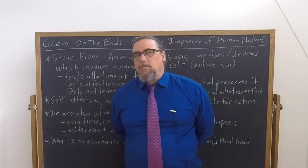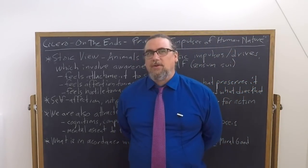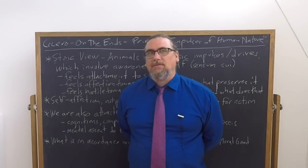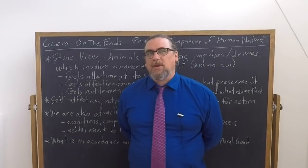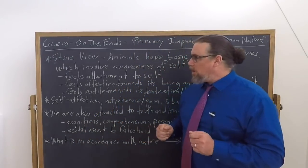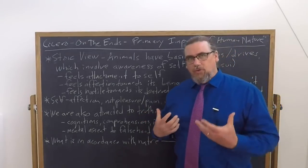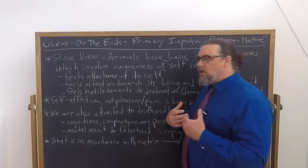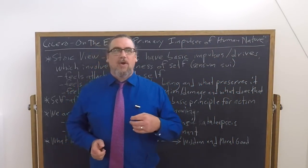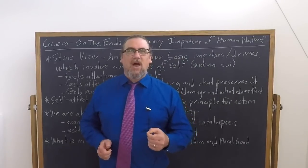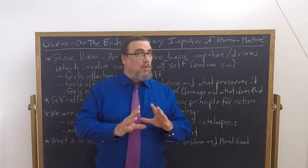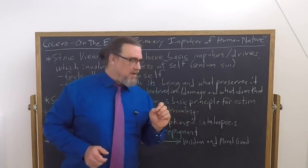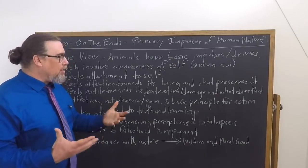Now he also goes on and he says, there's other things that as human beings, we are distinctively attracted to. And this takes us beyond the level of animality as such and into something distinctively human. What is that? He says, we're attracted to truth and knowing. You might say we're attracted to reality. We are attracted to grasping reality as such, and we're also repulsed from the mistaking or non-grasping of reality.